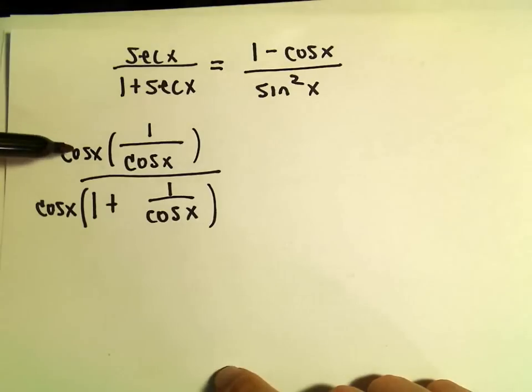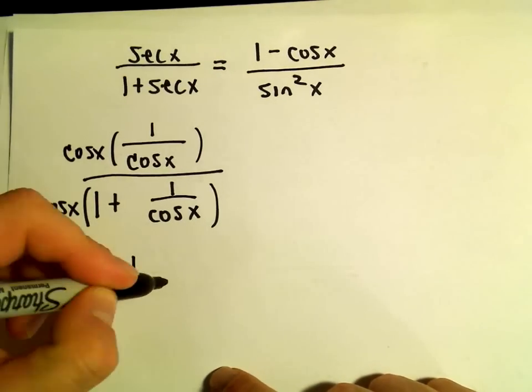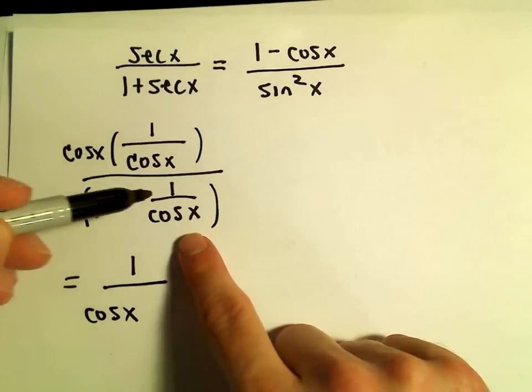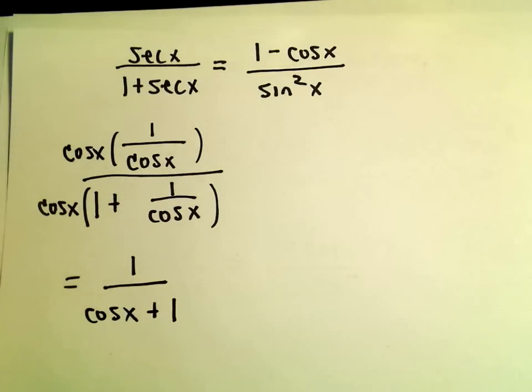If we do that, we'll get cos(x) times cos(x) in the numerator, which would just equal 1. In the denominator, we would have cos(x) times 1, which would be cos(x). And then cos(x) times 1/cos(x), which would give us another positive 1.